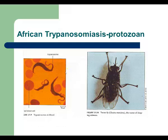On this slide, the left image shows Trypanosoma brucei as it appears in the bloodstream, and the right image shows the tsetse fly that transmits African sleeping sickness.